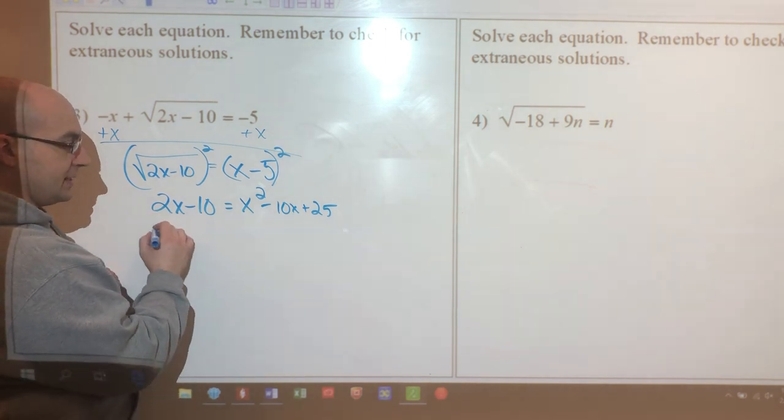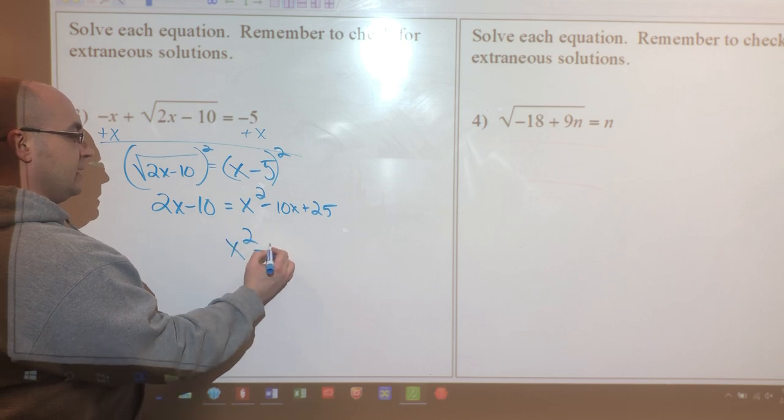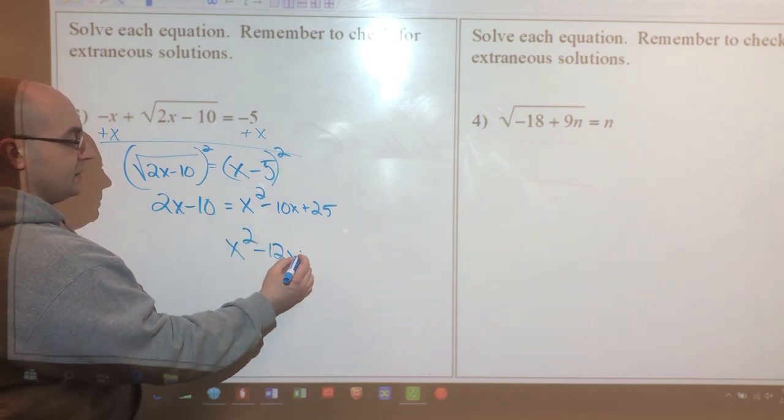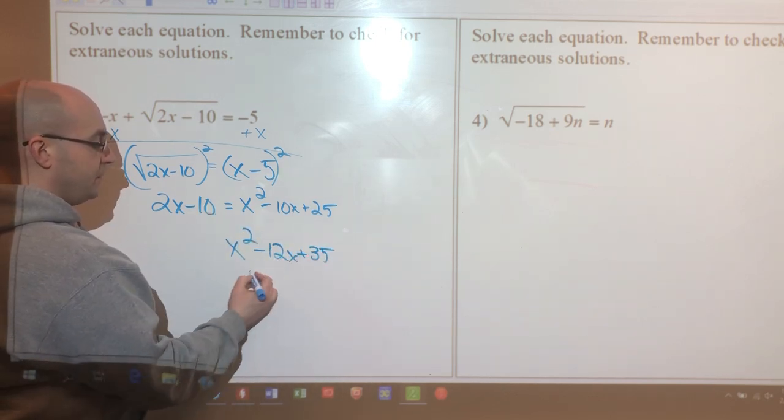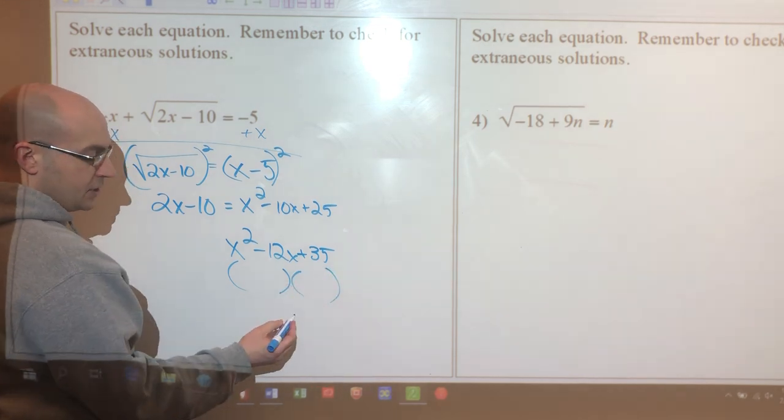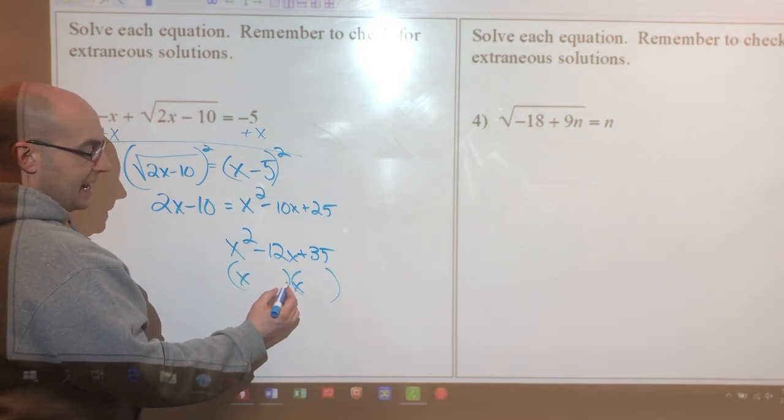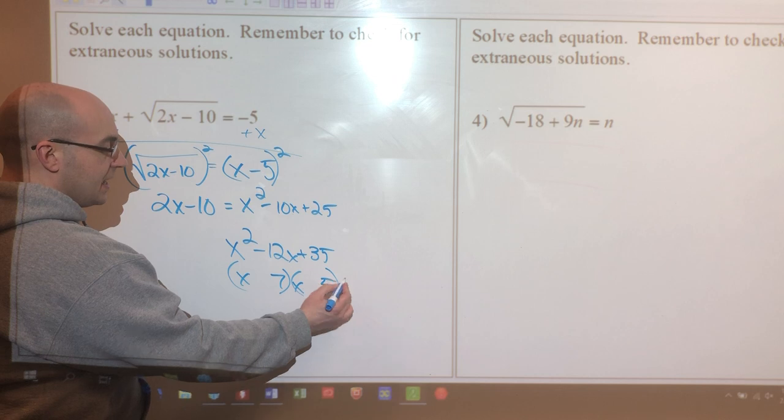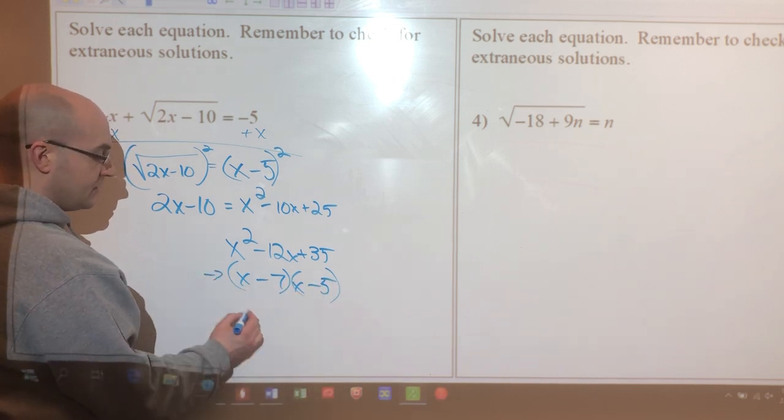Now I have to combine like terms. I'm gonna solve the quadratic here, so subtracting 2x on both sides will leave me with negative 12x, and adding 10 to both sides will leave me with positive 35. I'm factoring this using inspection. I know I have an x and an x, I need a 7 and a 5, and they're both gonna have to be negative, so these are my factors.